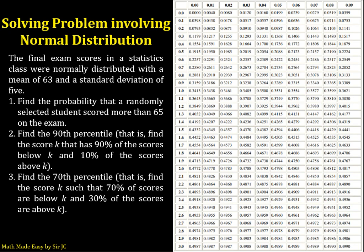In this video, we are going to solve a problem involving normal distribution. The problem is: the final exam scores in a statistics class were normally distributed with a mean of 63 and a standard deviation of 5.